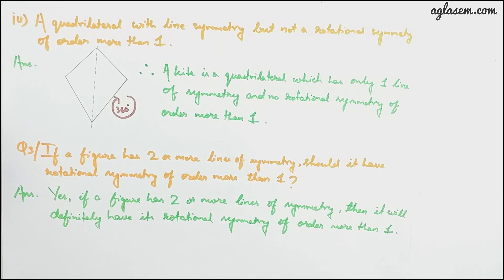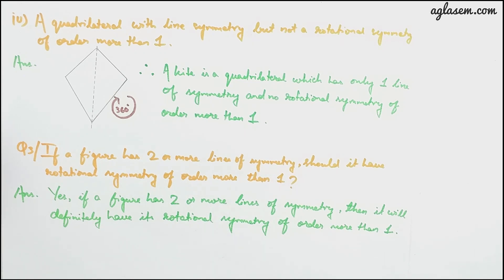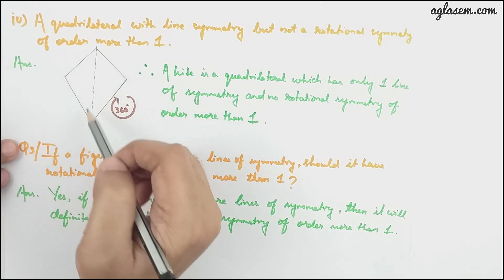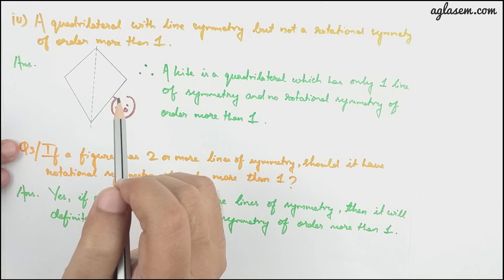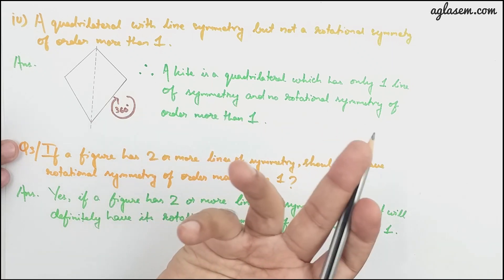The fourth part asks for a quadrilateral with line symmetry but no rotational symmetry of order more than one. The answer is a kite — it is a quadrilateral which has only one line of symmetry and no rotational symmetry. If a line is drawn through this point and it is rotated 360 degrees, it returns to the same position.